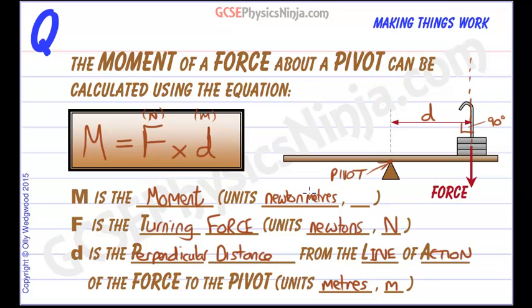Now notice there is no per here. It's not newtons per meter, it is just straightforward newton meters, all one thing. A bit of a strange unit I know. And the shortening would be capital N little m.